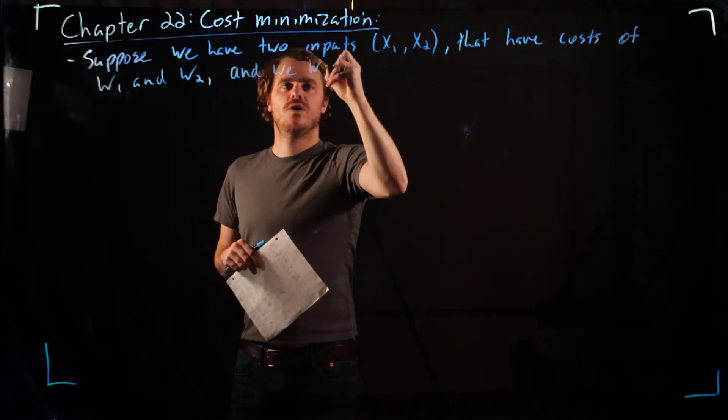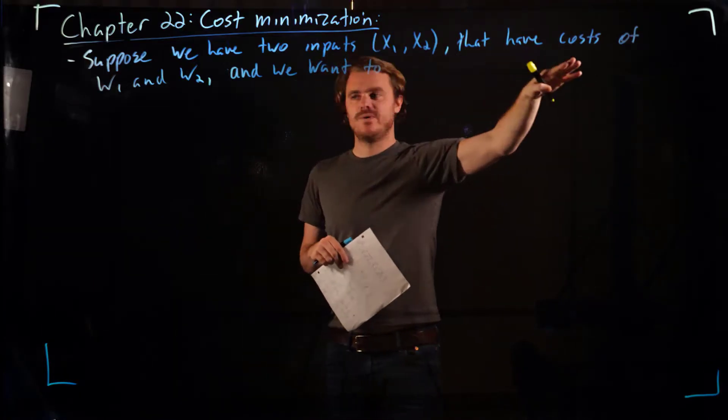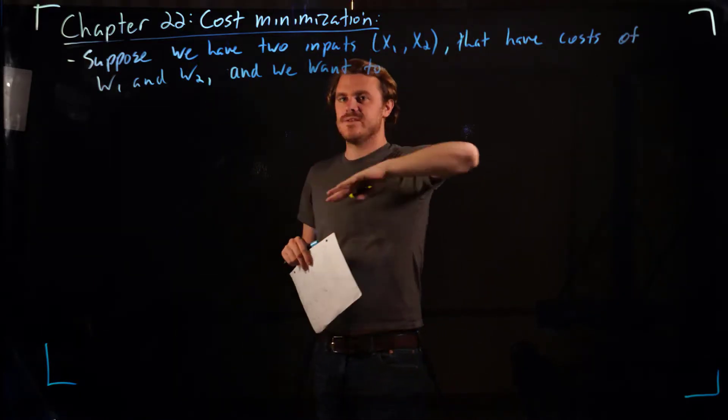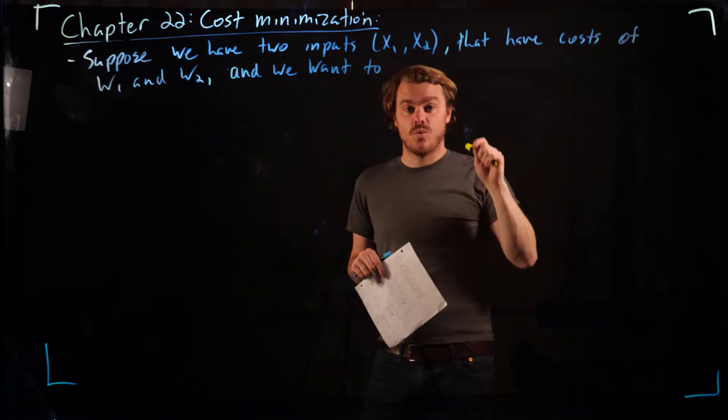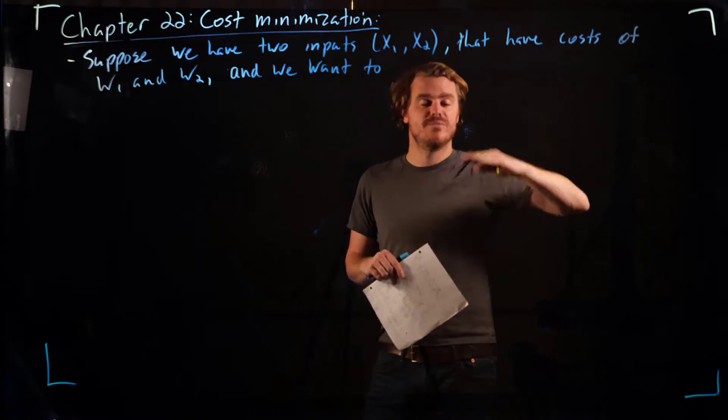Suppose we have these two inputs with these costs, and we want to figure out the cheapest way to produce y units of output, where y is some number.